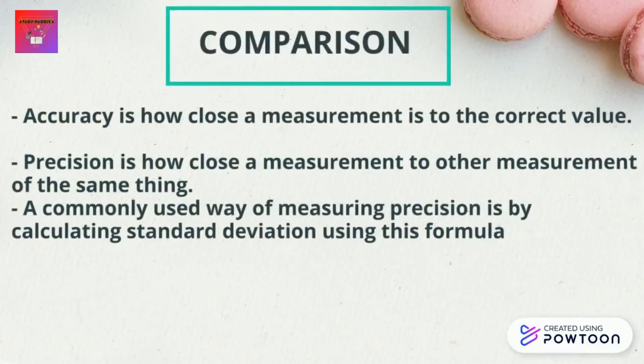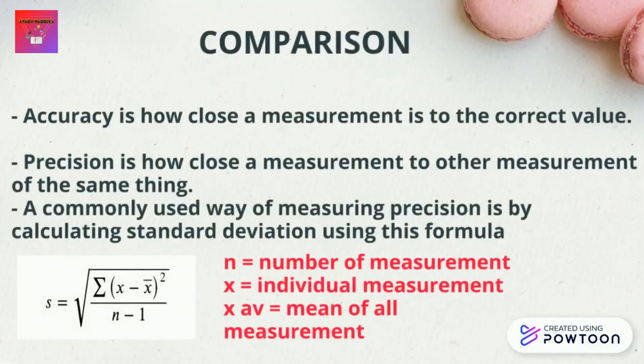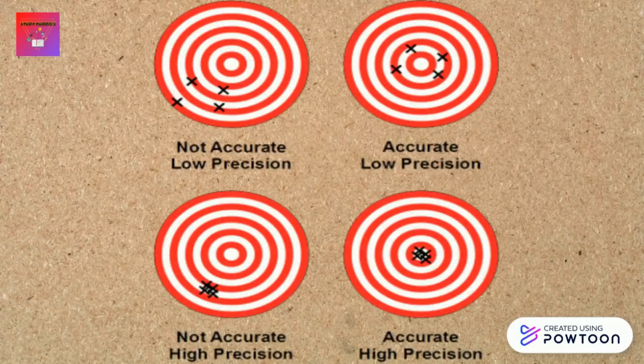Accuracy and precision are not the same thing, although they are related. Accuracy is the degree of closeness of a measurement to the correct value — that is, the agreement of a measurement with the accepted value. Precision is the degree of closeness of a measurement to other measurements of the same thing, in other words the degree of reproducibility. A commonly used way of measuring precision is by calculating standard deviation, where n represents the number of measurements, x represents each individual measurement, and x-average is the mean of all measurements.